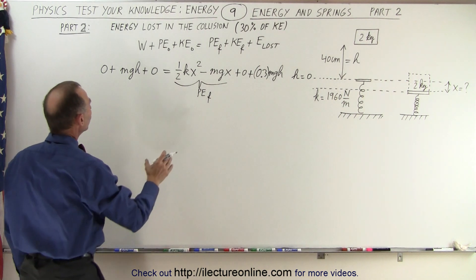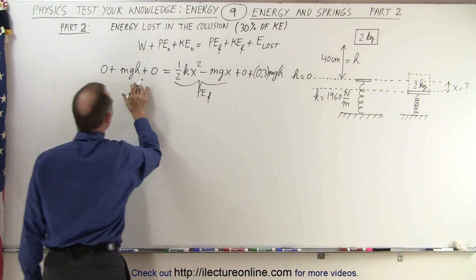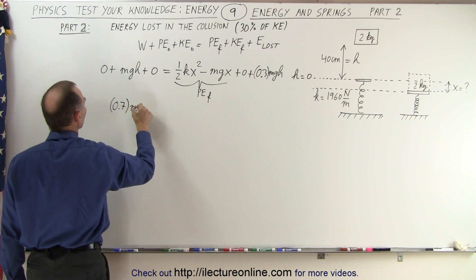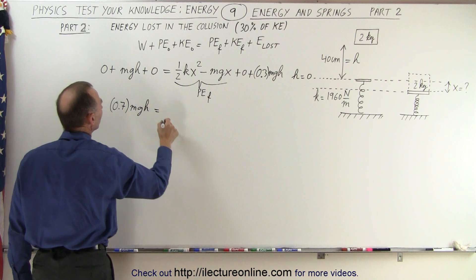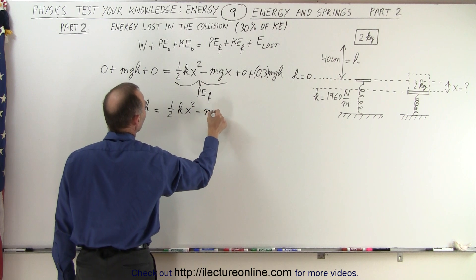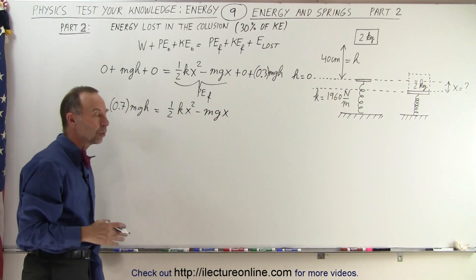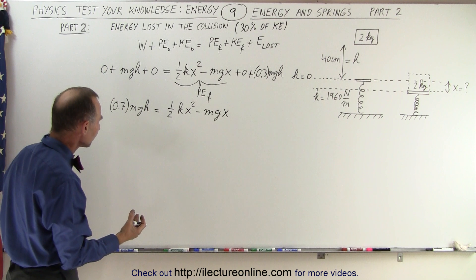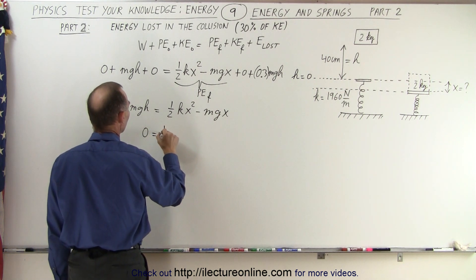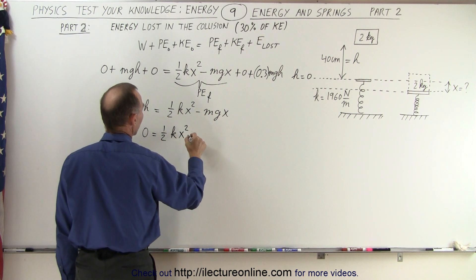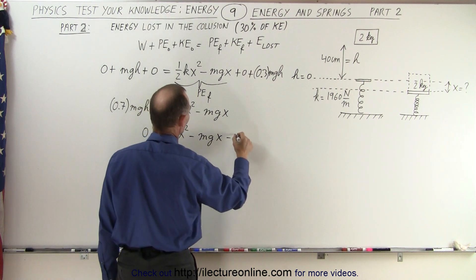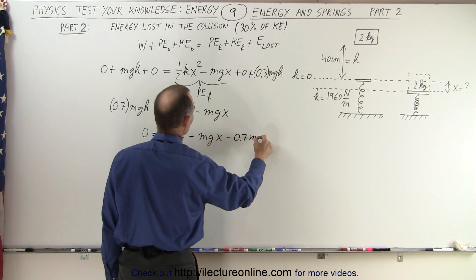When we want to solve this, notice we can move the energy-loss term to the other side. This becomes 0.7 MGH equals one-half kx² minus Mgx. Again, it looks like we're going to end up with a quadratic equation. Everything needs to go to one side: zero equals one-half kx² minus Mgx minus 0.7 MGH.